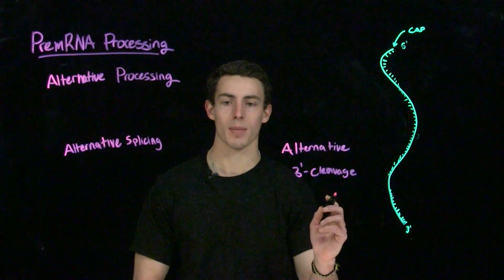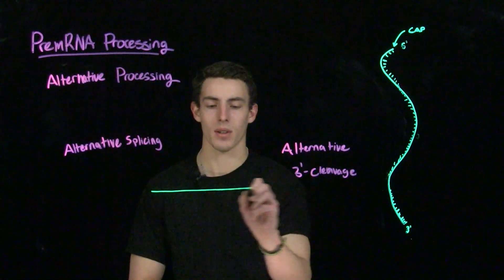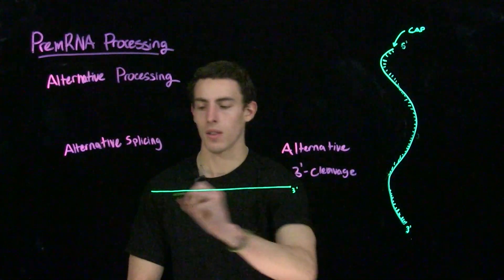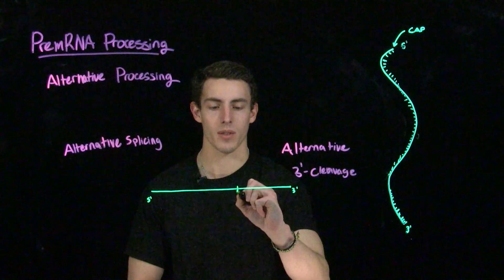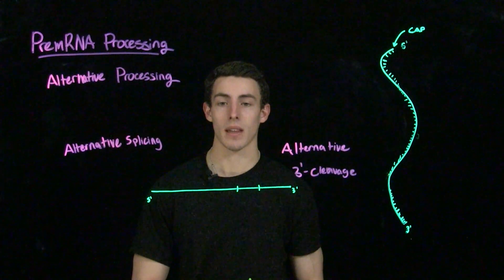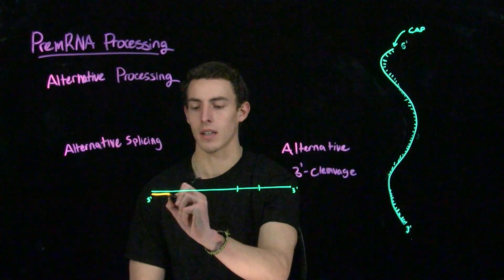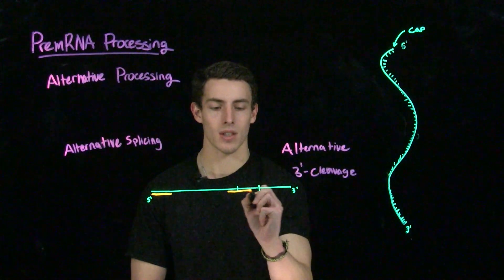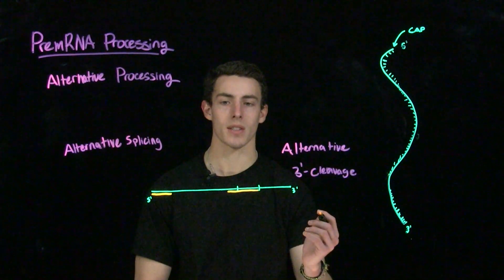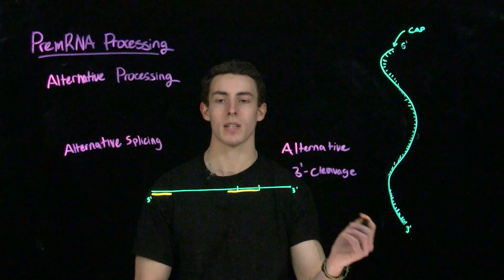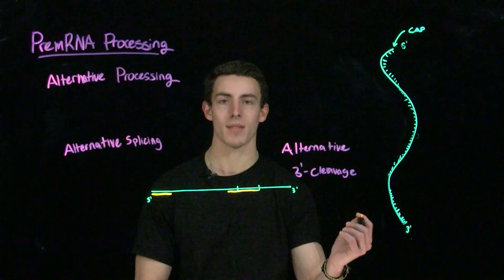In addition to alternative splicing, we also have alternative 3' cleavage. In alternative 3' cleavage, we could have multiple different cleavage sites at the 3' end. Thus, during polyadenylation, we could actually form multiple different products. In a gene with multiple 3' cleavage sites, you could potentially cut in the middle of an exon and change the gene product produced. These are ways that a eukaryotic cell may actually express more protein products than the number of genes they actually have, showing the adaptability of these types of cells.